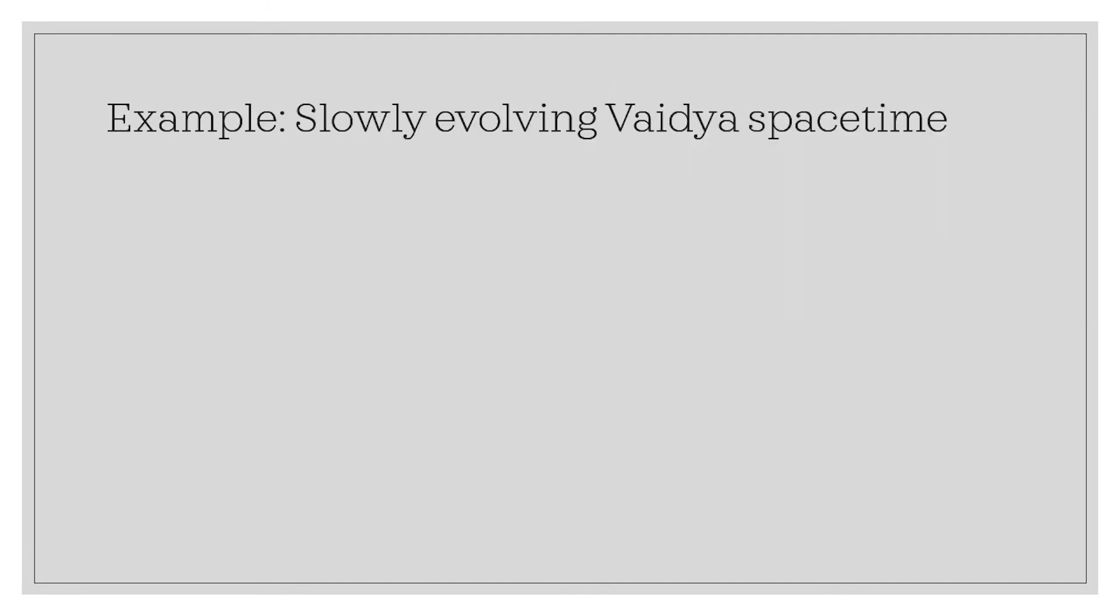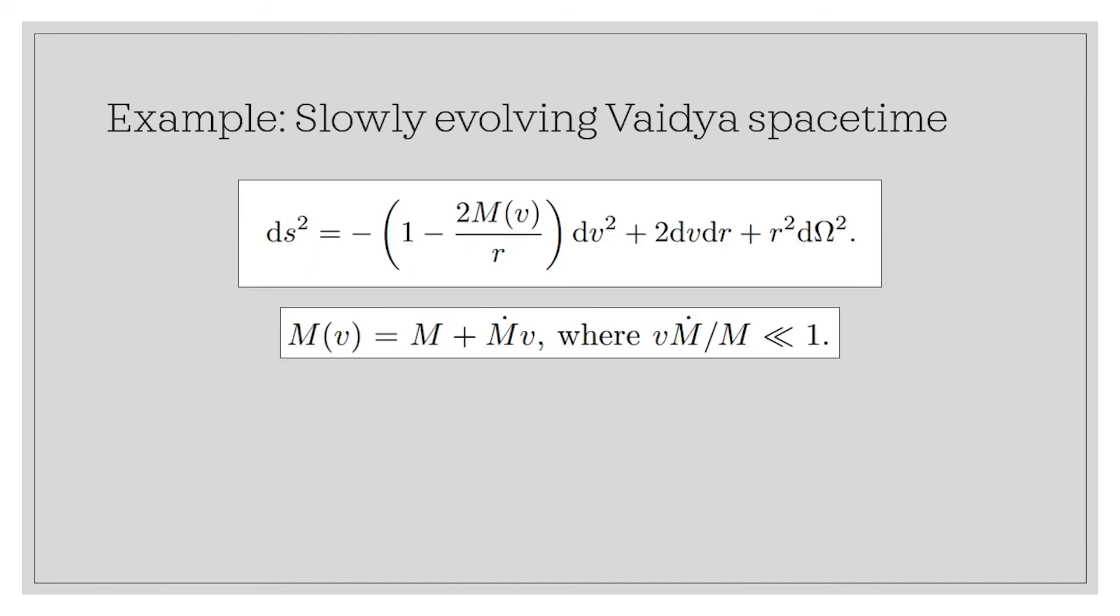Finally, we applied the result to the slowly evolving Vaidya spacetime given by this metric. We found that the geometric horizon is defined by this equation. The physical interpretation of this horizon is left for future work. Thank you.